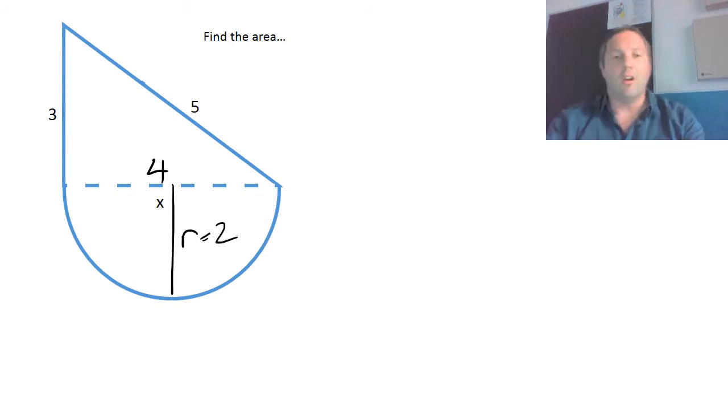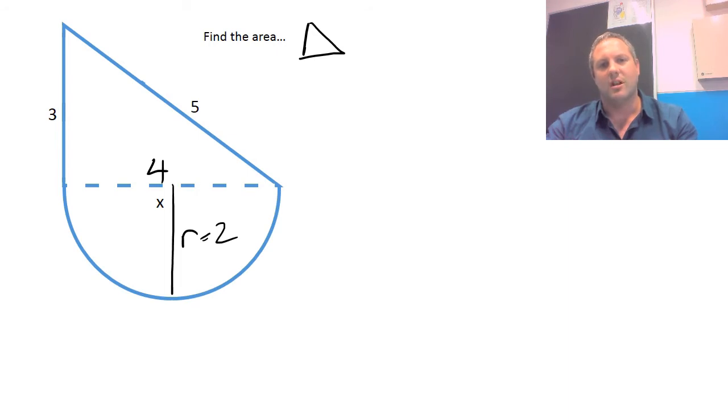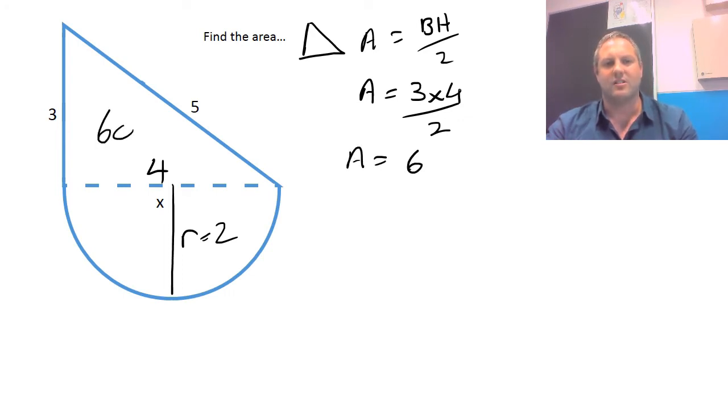Alright, so now what we need to do, we've established this is 4. Let's find the area for our triangle. So we've got our triangle, and we're going to say area equals, now if you remember, base times height divided by 2 gives you area. So in this case, we're going to say area equals 3 times 4 divided by 2, which obviously is 6. So the area for our triangle is 6 square metres.